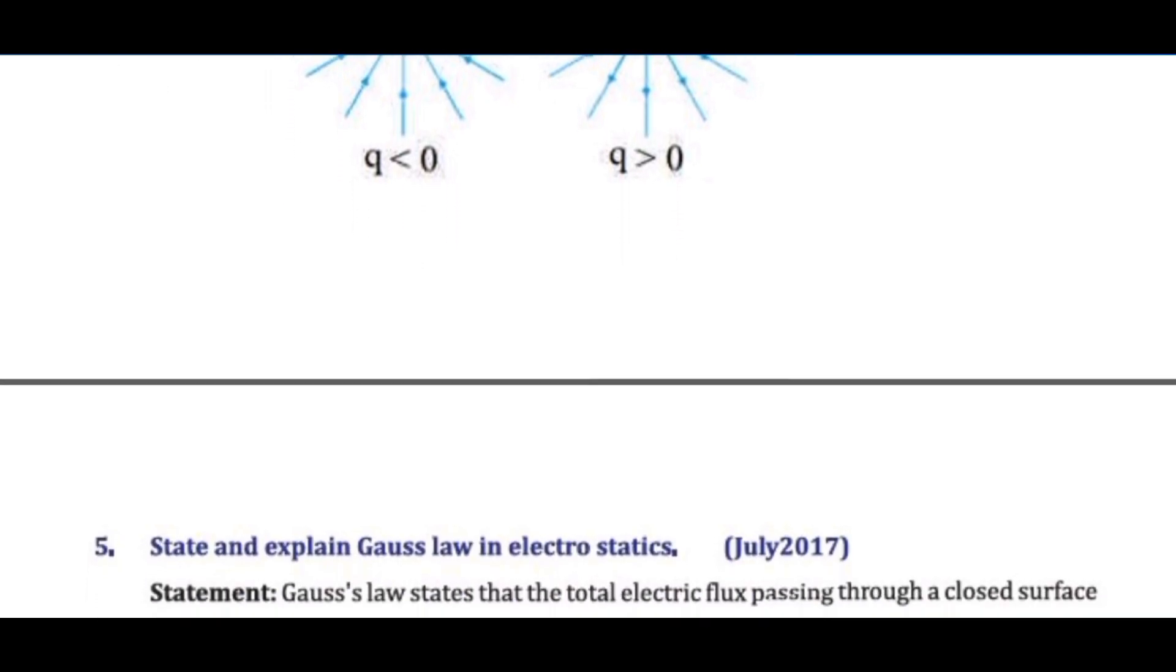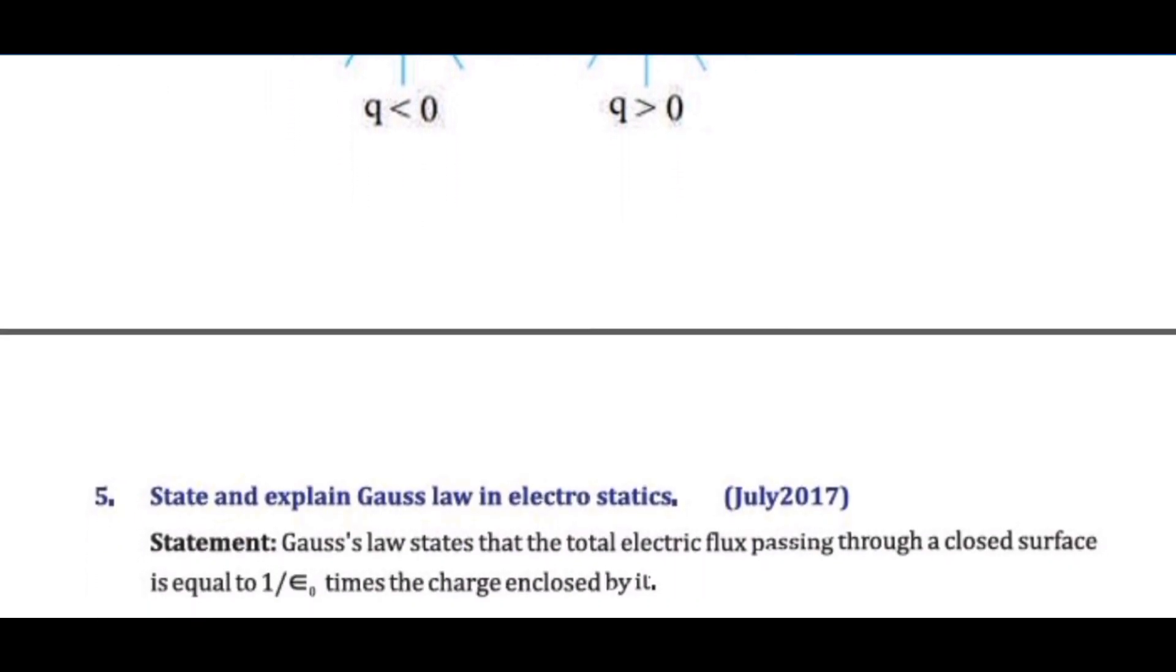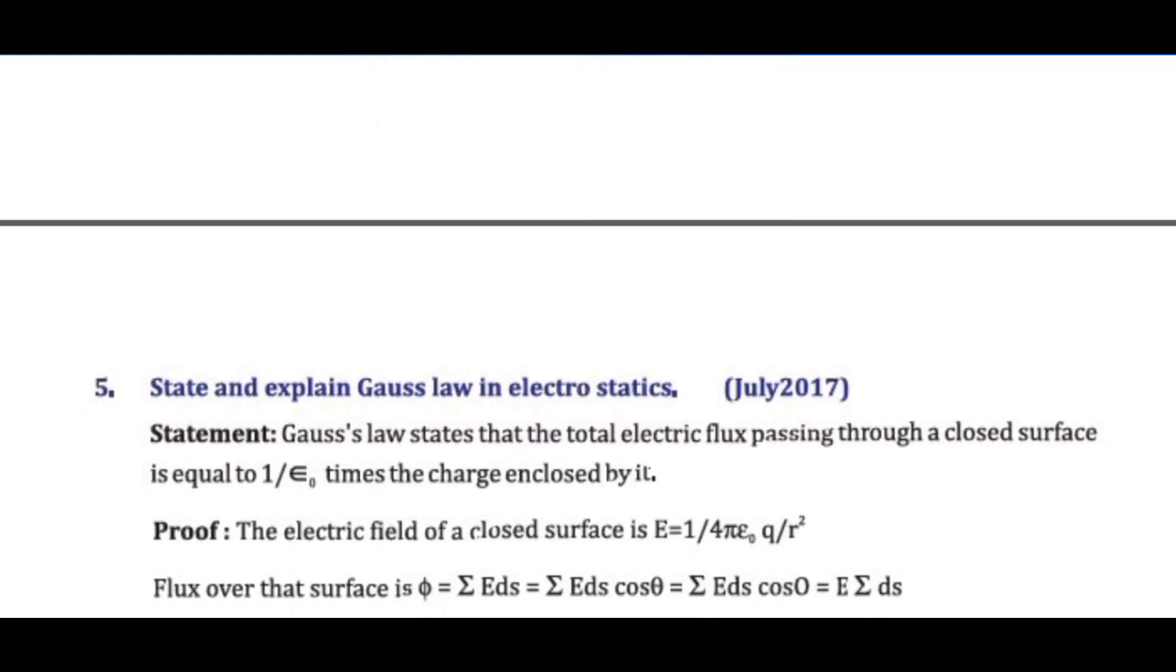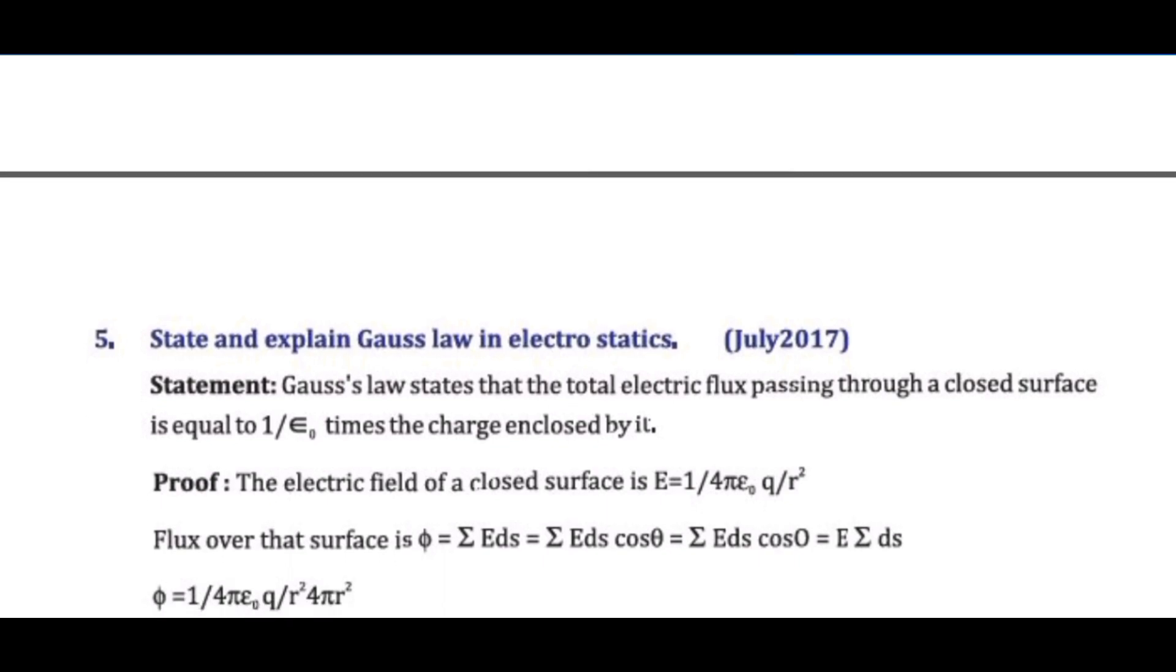Question 5: State and explain Gauss's law in electrostatics. Statement: Gauss's law states that the total electric flux passing through a closed surface is equal to one over epsilon zero times the charge enclosed by it.